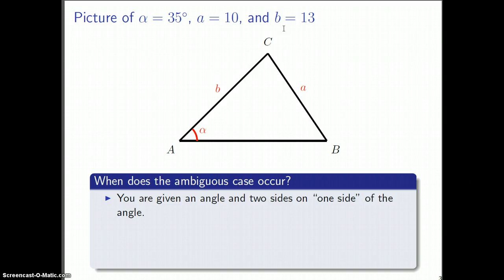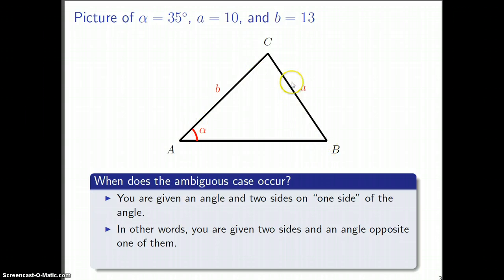This ambiguous case that we're about to study occurs when you're given an angle, like here alpha, and you have two sides which are on one side of the angle. What I mean is on one side of this angle is over here, this b, and then if you continue along this way, you get this other next side, a.